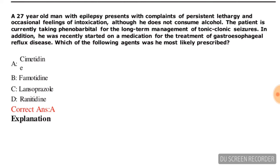Next question: a 27-year-old man with epilepsy presents with persistent lethargy and occasional feeling of intoxication, although he does not consume alcohol. The patient is currently taking phenobarbital for long-term management of tonic-clonic seizures. He was recently started on a medication for the treatment of gastroesophageal reflux disease. Which of the following agents was he most likely prescribed? Options are cimetidine, famotidine, lansoprazole, or ranitidine. The correct answer is cimetidine — option A.